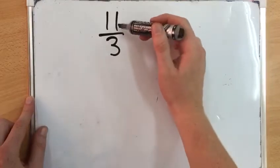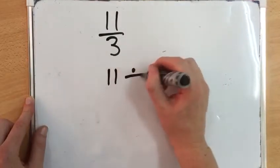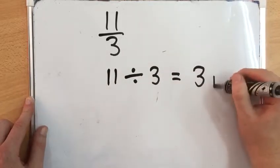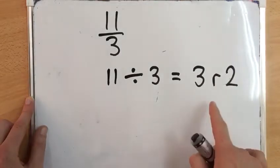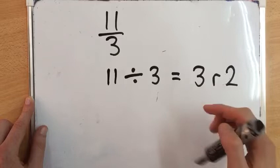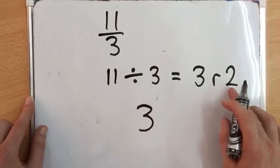So 11 divided by 3 equals 3 remainder 2. We do not write it as 3 remainder 2. We write our whole number down, 3, and we then take the remainder of 2 and put it over our denominator.